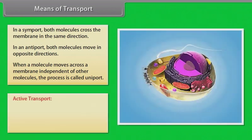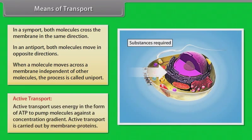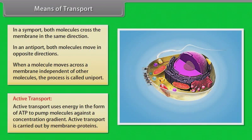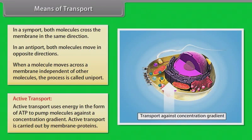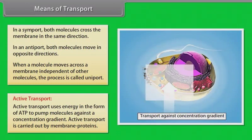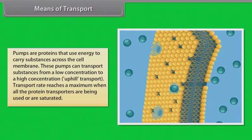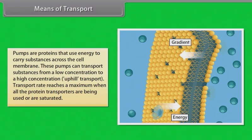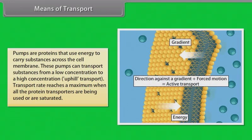Another means of transport is active transport. Active transport uses energy in the form of ATP to pump molecules against a concentration gradient. Active transport is carried out by membrane proteins. Different proteins in the membrane play a major role in both active as well as passive transport. Pump proteins use energy to carry substances across the cell membrane and can transport substances from a low concentration to a higher concentration — uphill transport. Transport rate reaches a maximum when all the protein transporters are being used or are saturated.